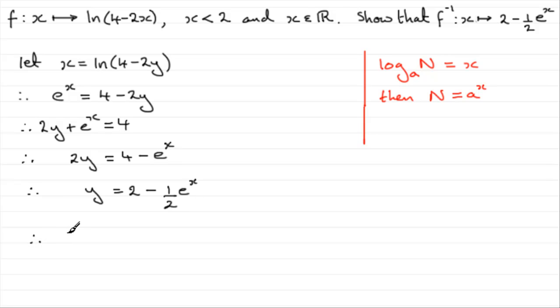So therefore, the inverse function of f, f to the minus 1, is such that, and then we can just write that x maps onto 2 minus a half e to the power x.